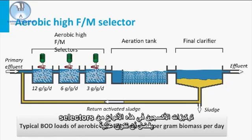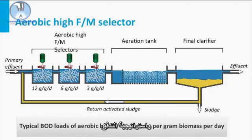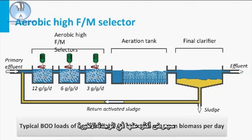Oxygen concentrations in these types of selectors are preferably high. An SBR type of system can also act as a very effective selector, depending on wastewater strength and feeding strategy. This method is for example used in Nereda to grow aerobic granular sludge, of which more is shown in the last module.